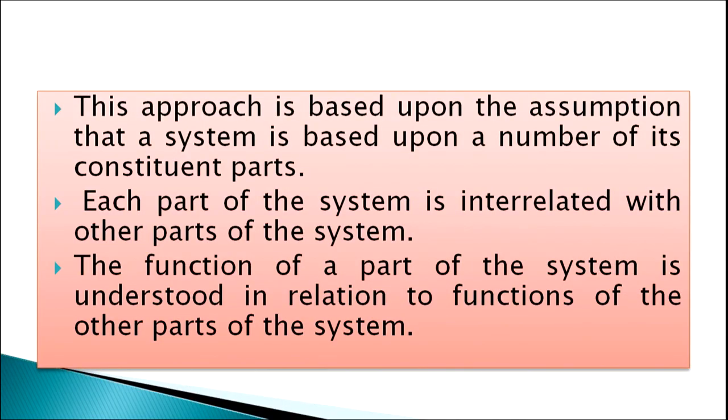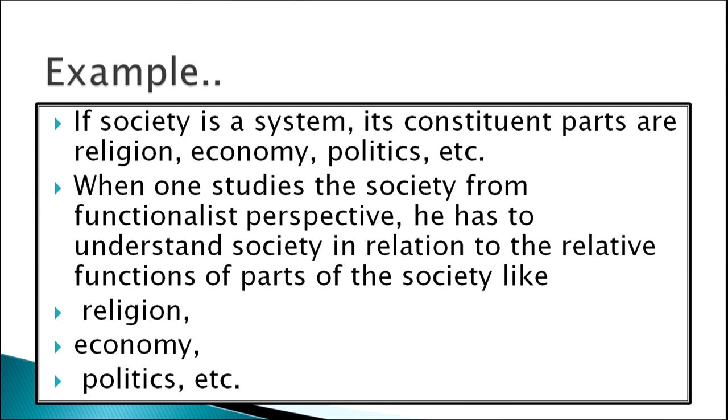This approach is based on the assumption that a system is based upon the number of its constituent parts. Each part of the system is interrelated with the other parts, and the function of each part is understood in relation to the functions of the other parts. For example, if a society is a system, its constituent parts are religion, economy, and politics. When studying society from a functionalist perspective, one must understand it in relation to the functions of these parts.